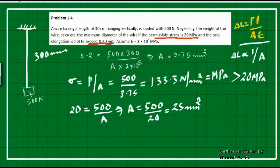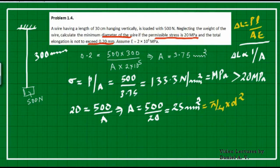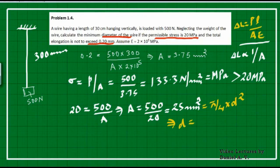Since the required area is 25 mm square, and the problem asks for the minimum diameter, we use area equals pi by 4 times d square. Solving, d equals the square root of 25 times 4 divided by pi, which gives 5.64 mm. That is the diameter we need to provide.